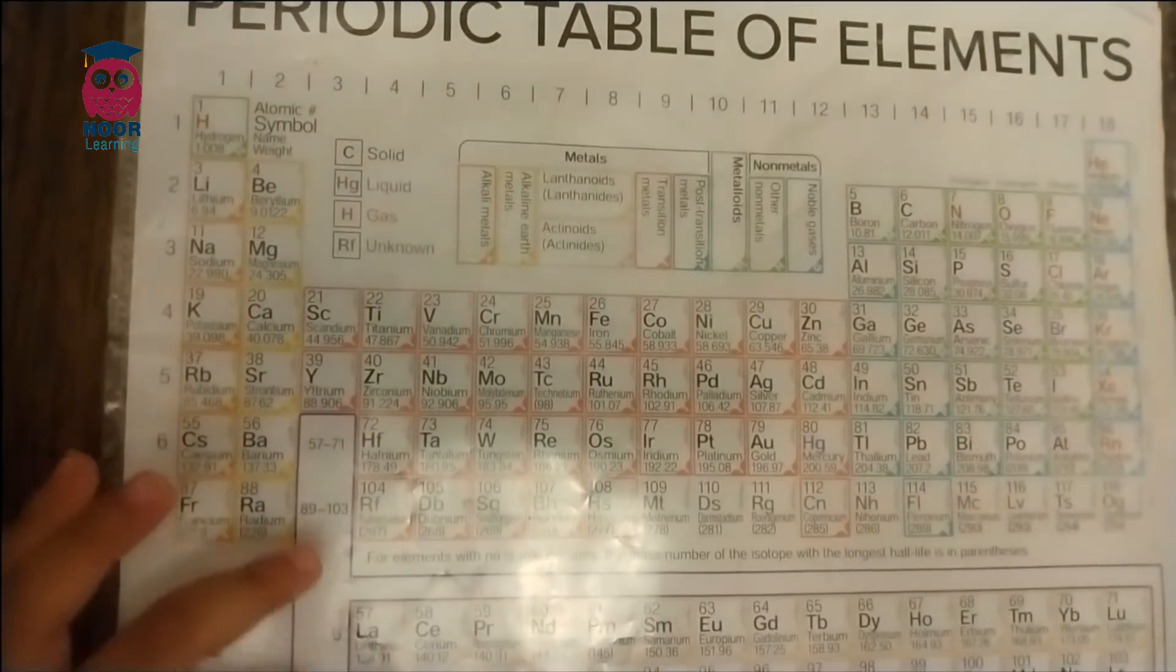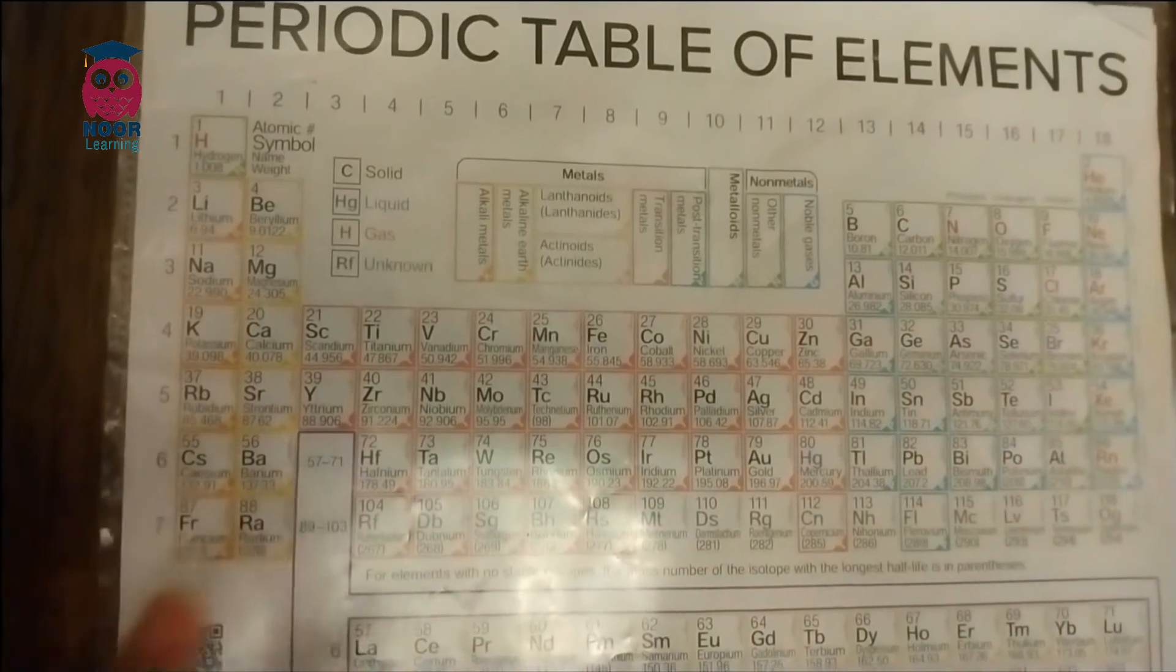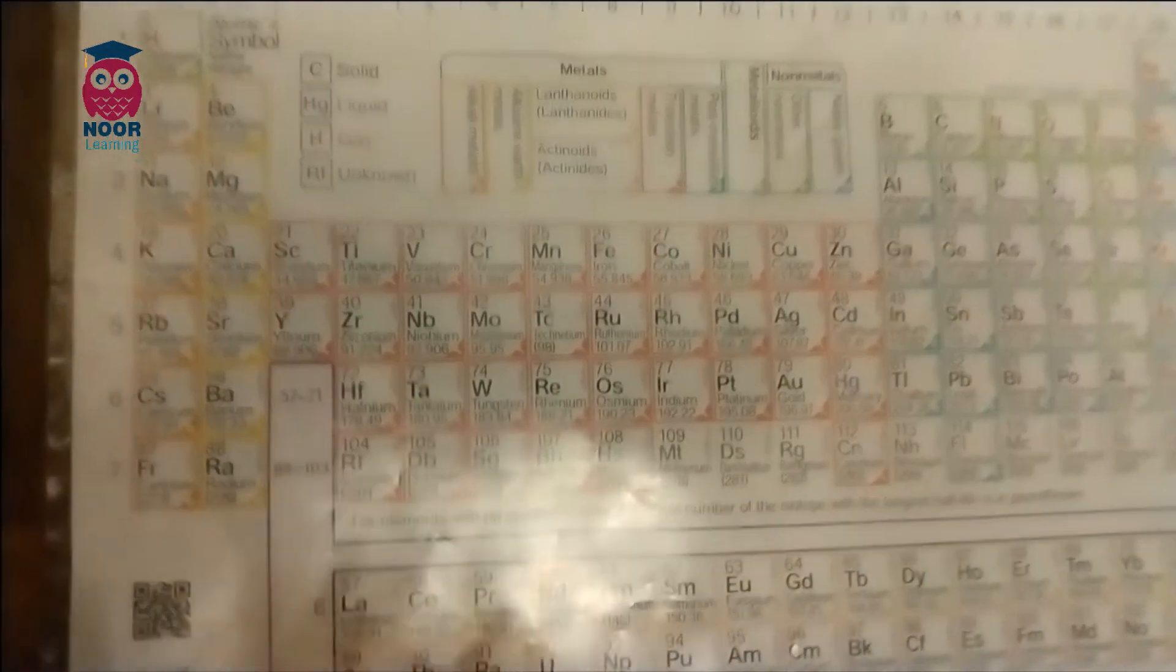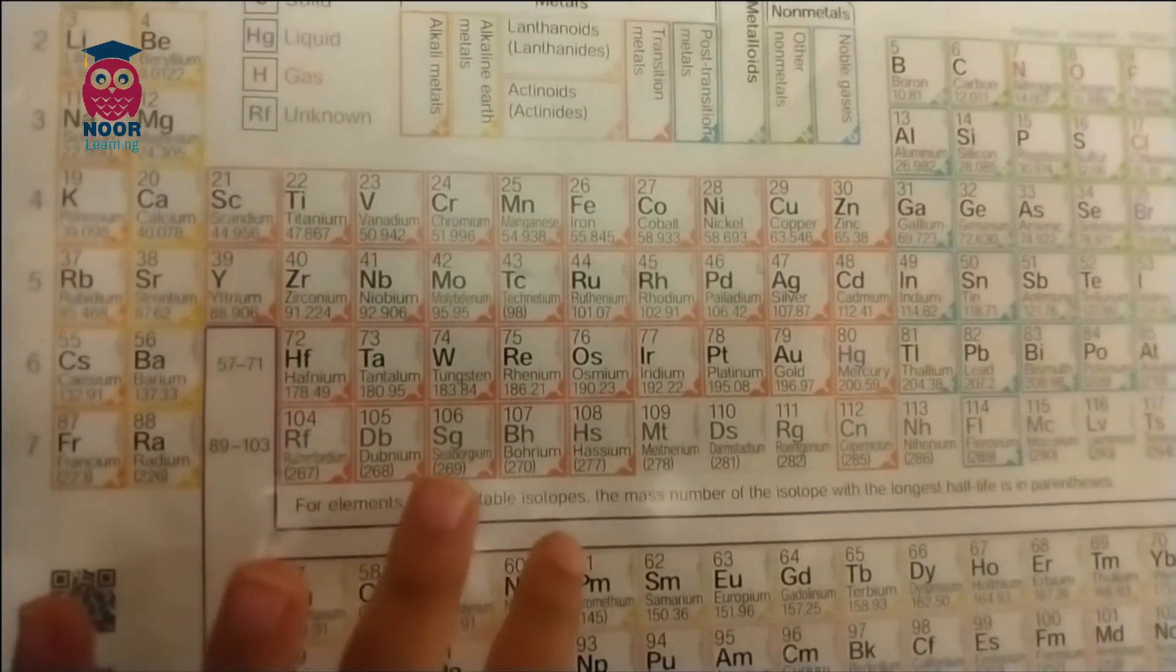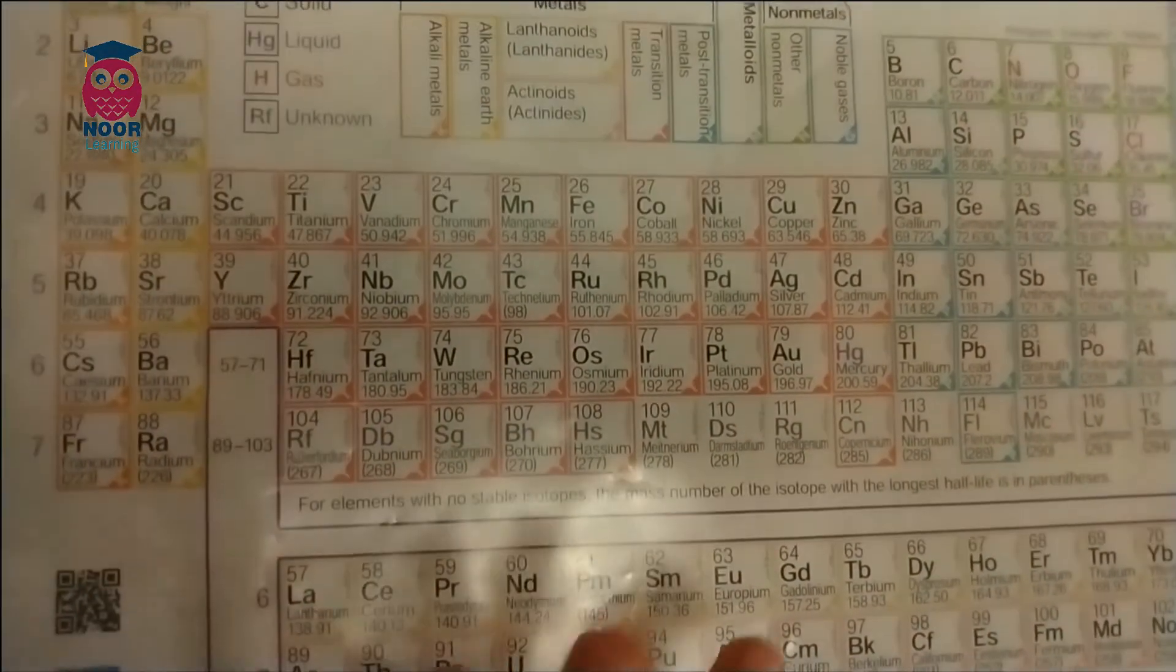The lanthanides have just begun. Lanthanum, cerium, and praseodymium. Neodymium is next to promethium, then 62.